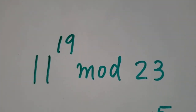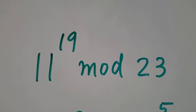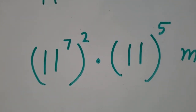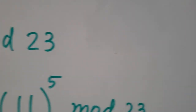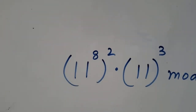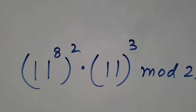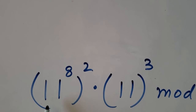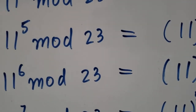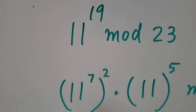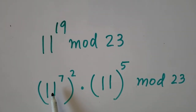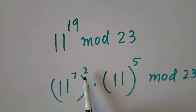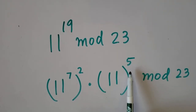Now let's look at the problem 11 to the power 19. That can be written as 11 to the power 7 squared times 11 to the power 5 mod 23. We could also use the combination 11 to the power 8 squared times 11 to the power 3 mod 23, but for that you'd have to calculate 11 to the power 8, one more step. So I'll use 11 to the power 7 squared times 11 to the power 5 — because 7 times 2 is 14, and 14 plus 5 is 19.